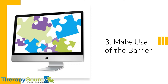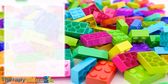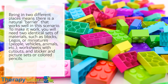Make use of the barrier. Barrier games can sharpen many communication skills, including listening, oral language, social language, clear talking, understanding, and using concepts. These types of activities are also great for extending the amount of information a person can understand or express within a sentence. Being in two different places means there is a natural barrier that works well in this scenario. To make it work, you will need two identical sets of materials, such as blocks, Legos, or miniatures — people, vehicles, animals, etc. — worksheets with cutouts, and sticker and picture sets, or colored pencils.